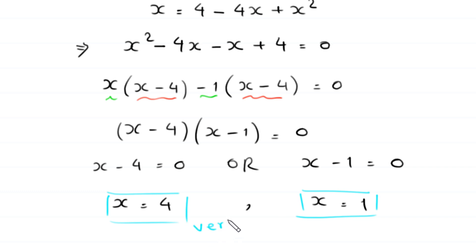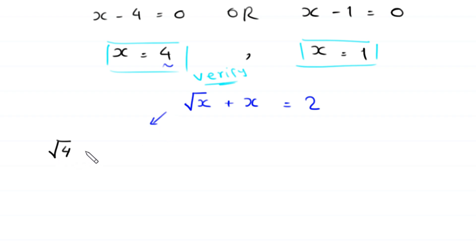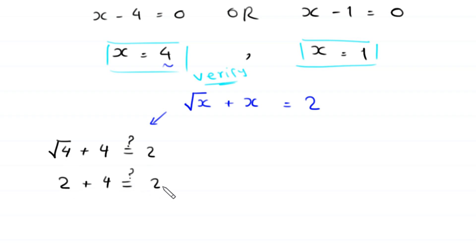The original equation is: square root of x plus x equals 2. When x equals 4, the equation becomes square root of 4 plus 4, which is 2 plus 4 equals 6. Since 6 is not equal to 2, x equals 4 is not a solution and is rejected.